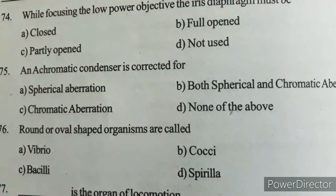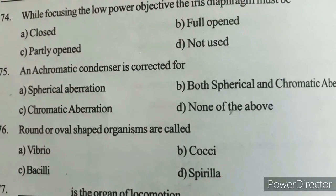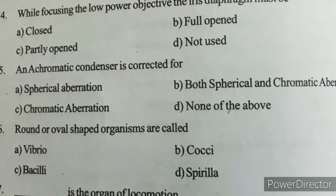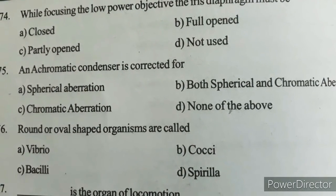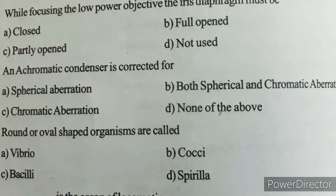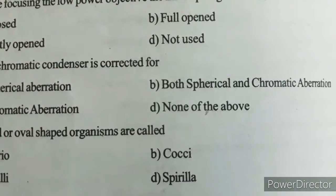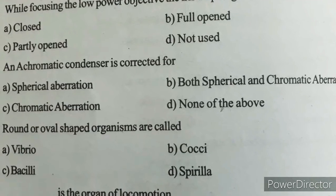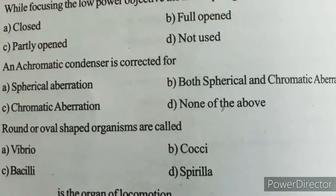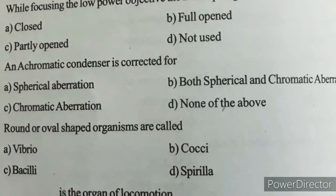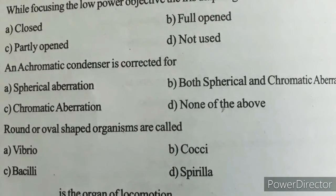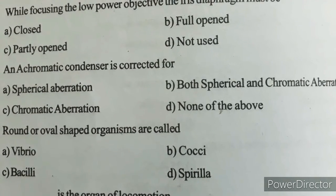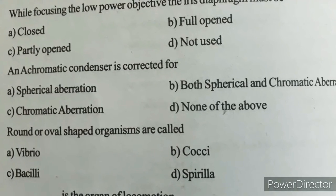Next question: An achromatic condenser is corrected for? Option A) Spherical aberration, Option B) Both spherical and chromatic aberration, Option C) Chromatic aberration, Option D) None of the above. Correct answer: Option B — Both spherical and chromatic aberration.